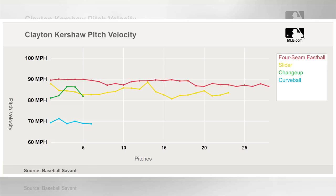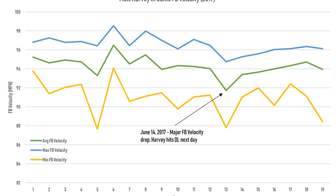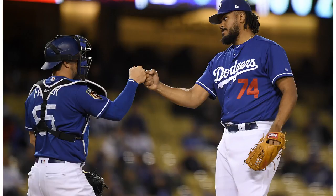Fastball velocity is generally steady — if someone throws 93–94 mph, they will continue to throw 93–94 mph. That number might rise or fall with age, but it will only do so gradually. So if a pitcher comes out of the gate throwing 2–3 mph slower than they've been throwing recently, something is probably wrong.